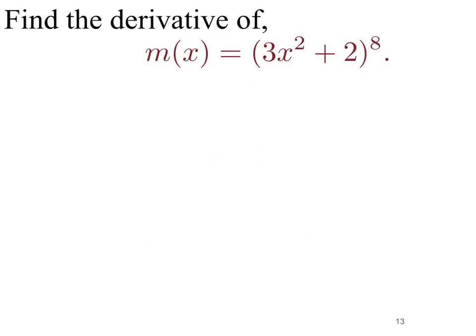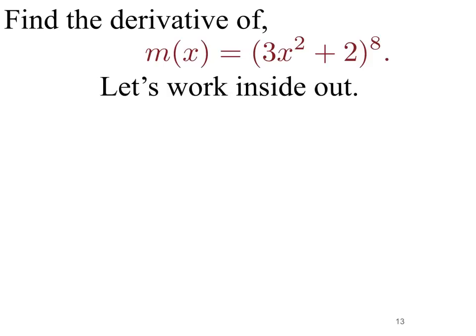Suppose we want to take the derivative of m of x equals 3x squared plus 2, all to the eighth power. First we have to recognize that this is a composite function — there is one function stuck inside of the other. We can see that 3x squared plus 2 is an inner function, and u to the eighth power is the outside function, raising whatever is inside to the eighth power. So we have a composite function, and therefore to find the derivative we need to use the chain rule.